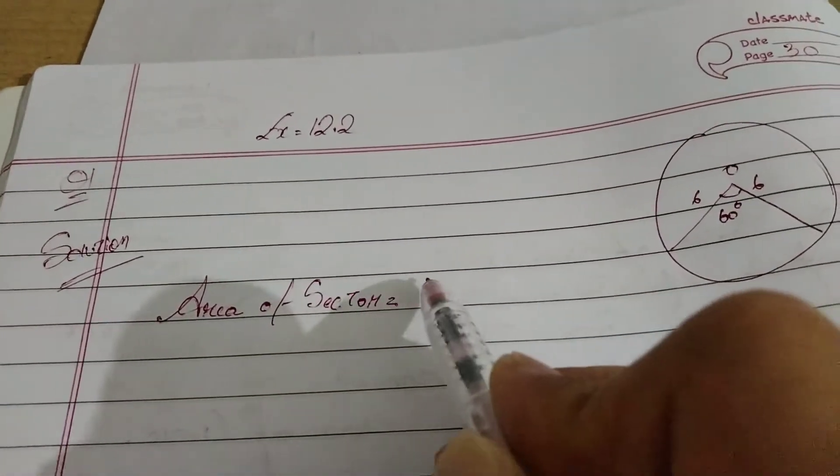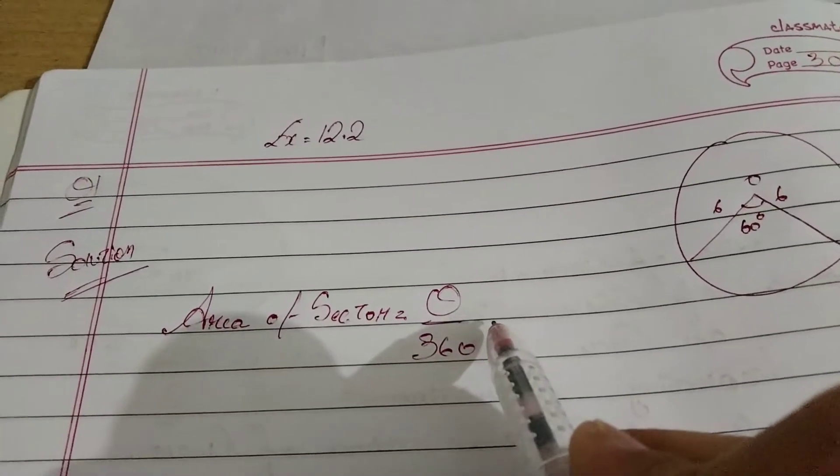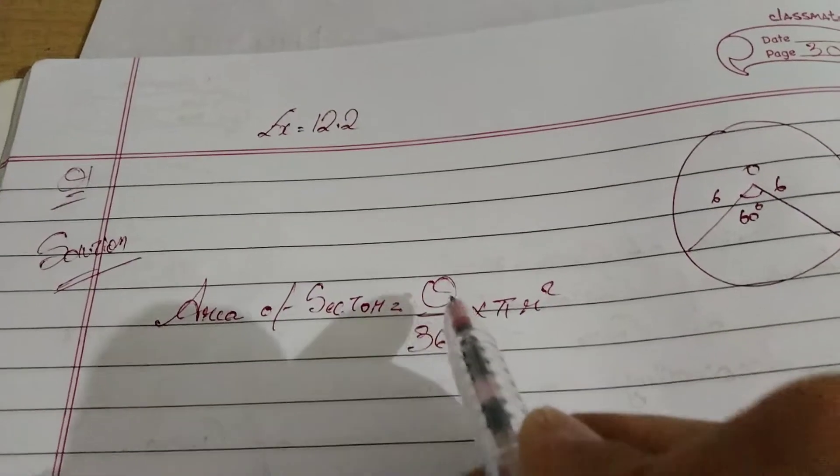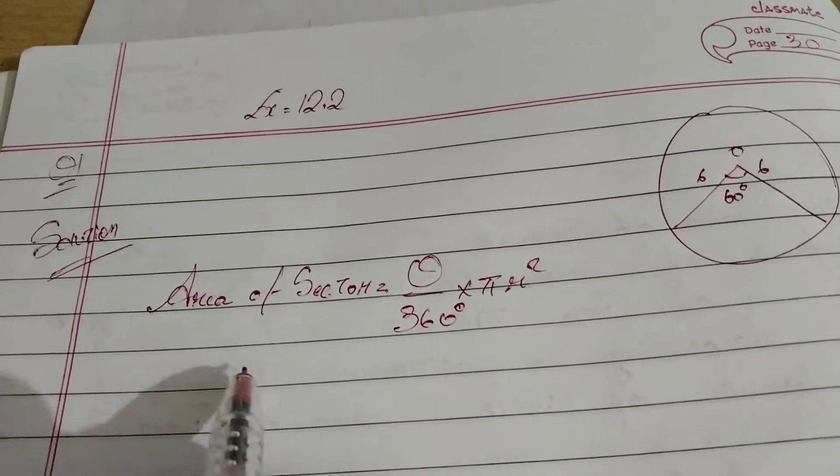The formula is theta by 360 into pi r square. Theta by 360 degree into pi r square.